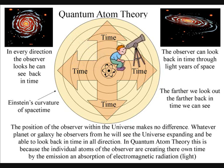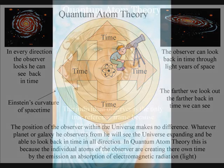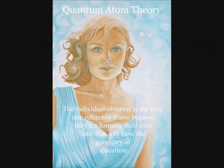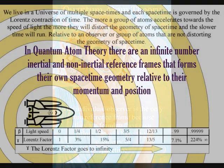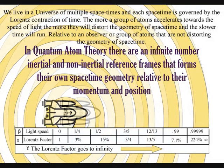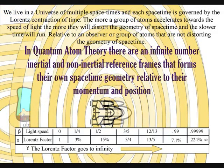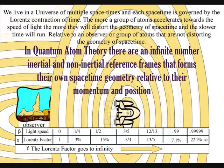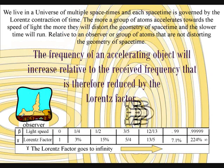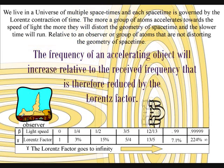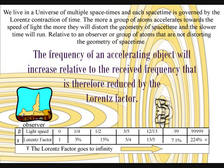Whatever planet or galaxy he observes from, he will be able to look back in time in all directions from the centre of his own reference frame. In quantum atom theory there is no universal time because the universe is made up of an infinite number of reference frames or space-times that will have their own local space-time geometry relative to their position and momentum.